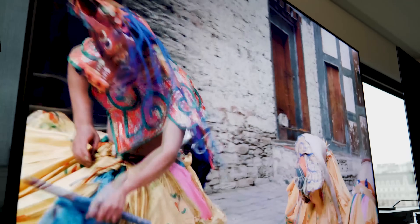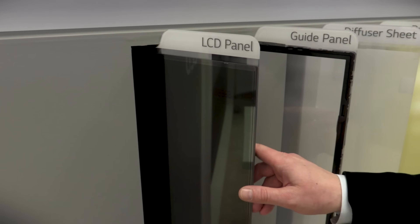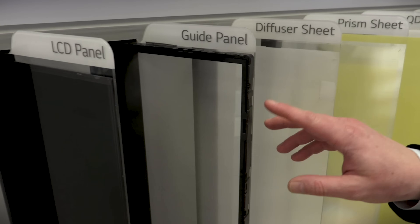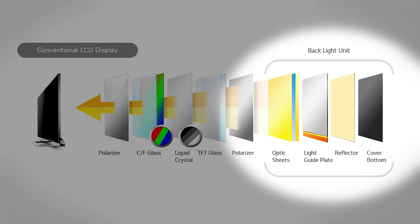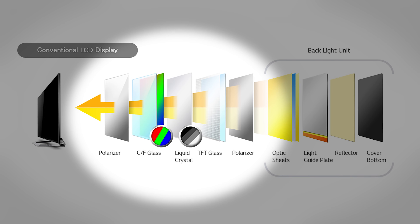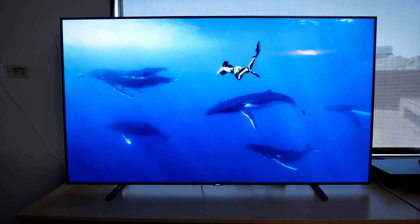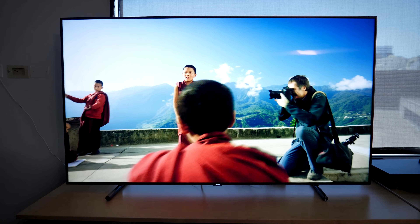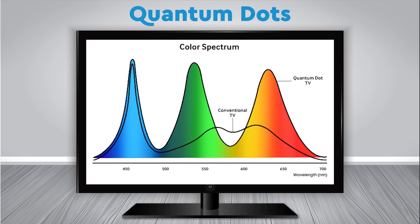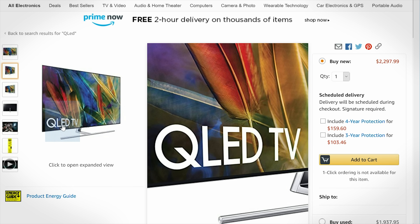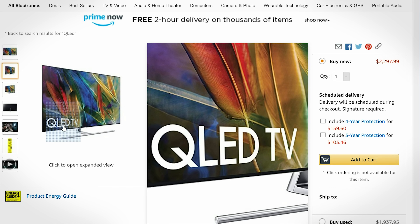LED TVs are actually LCD TVs with LED backlights. LCD panels can't produce their own light — they simply filter light through all these layers you see here to create color combinations leading to the picture you see. Light-emitting diodes, or LED backlights, sit behind LCD screens and provide the light they need. Recent advancements include the use of quantum dots, a material that helps LEDs produce a more perfect white light, allowing an LCD panel to better reproduce a wide range of colors and even brighter images. This is where those QLED and QD acronyms come from — think LED TV on steroids.